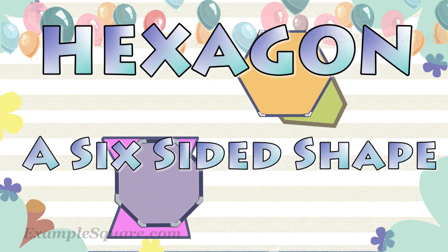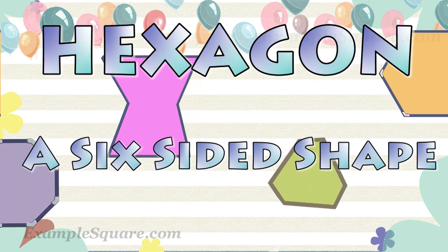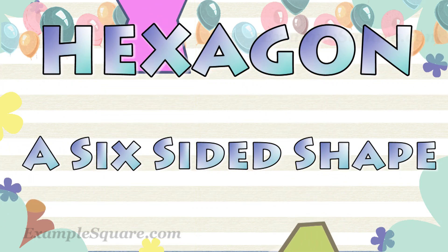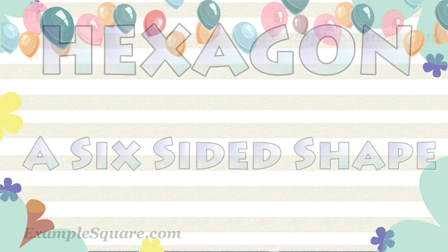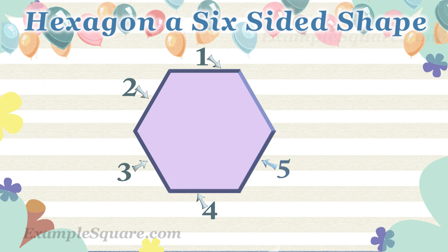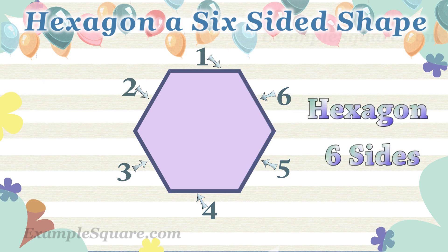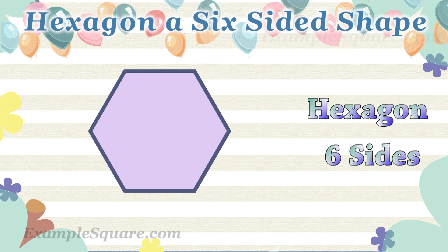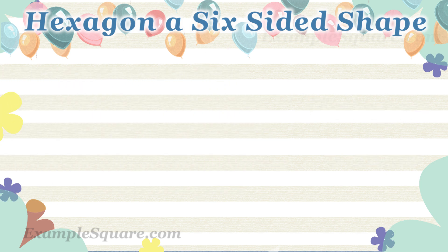Hexagon — a six-sided shape. What is a six-sided shape or a six-sided polygon? A six-sided shape or a six-sided polygon is called a hexagon. A polygon in general is a two-dimensional closed shape having three or more straight sides.